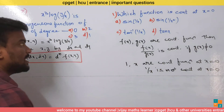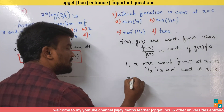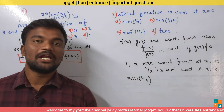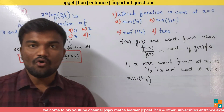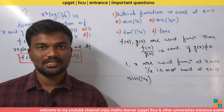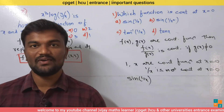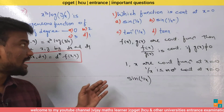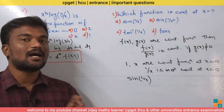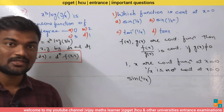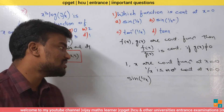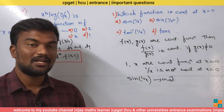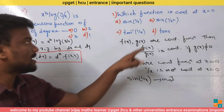Option A is sin(1/x). We know that sine, tan inverse, and tan are trigonometric functions, and every trigonometric function is continuous. So sine is continuous, but 1/x is not continuous. The composition of a continuous function and a non-continuous function is not continuous, so sin(1/x) is not continuous at x equals 0.